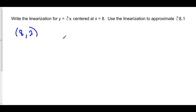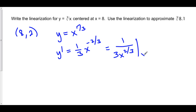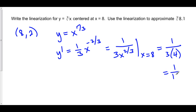To find the slope, we have to find the derivative at x equals 8. If y is equal to x to the 1 third, then y prime is equal to 1 third x to the negative 2 thirds. This is the same thing as 1 over 3 times x to the 2 thirds. And at x equals 8, this is equal to 1 over 3 times the cube root of 8 squared — 2 squared is 4 — so this is equal to 1 over 12.